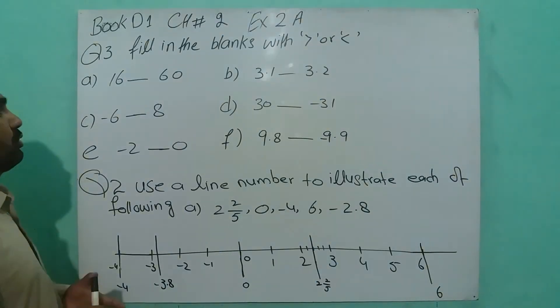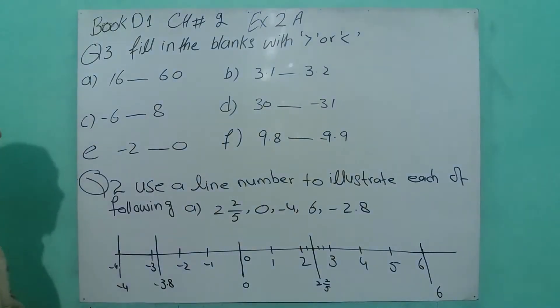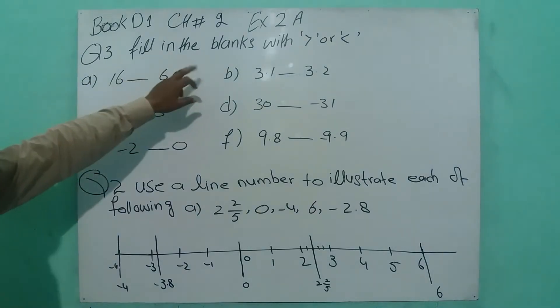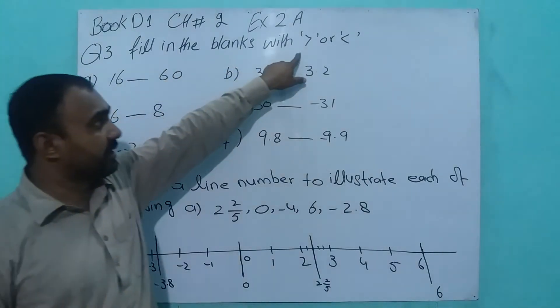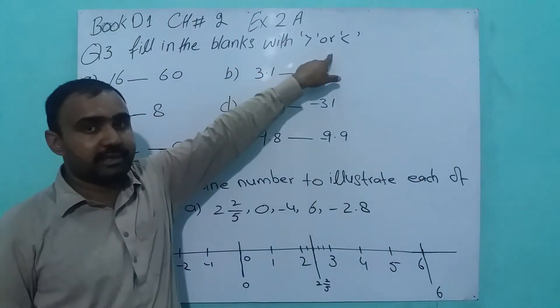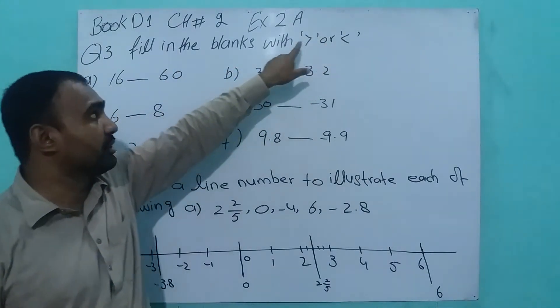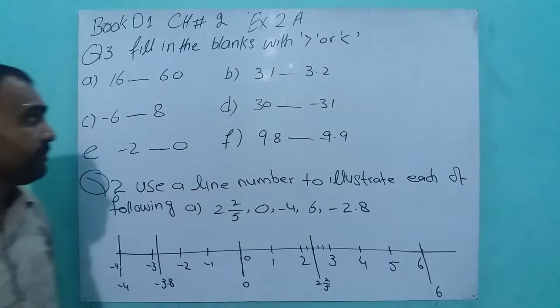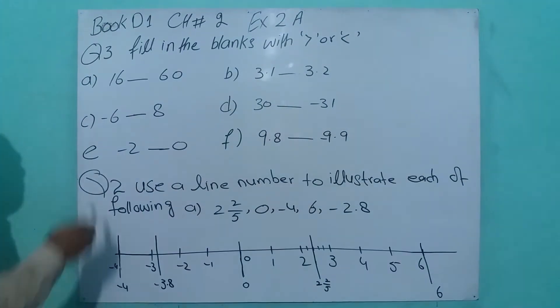Book D1, chapter number 2, exercise 2A. Question number 3: fill in the blanks with greater than or less than, using the greater than and less than signs. First part, A part.